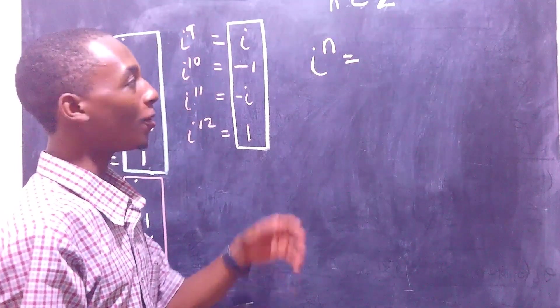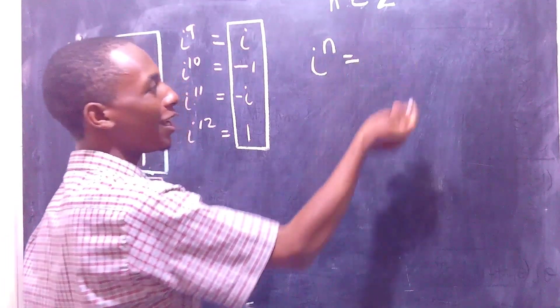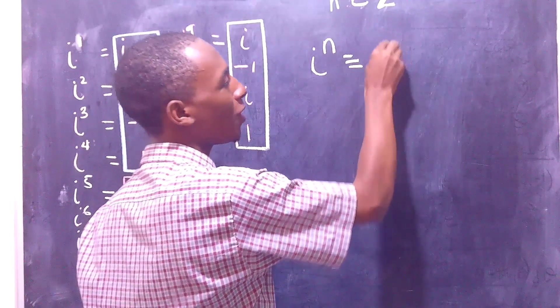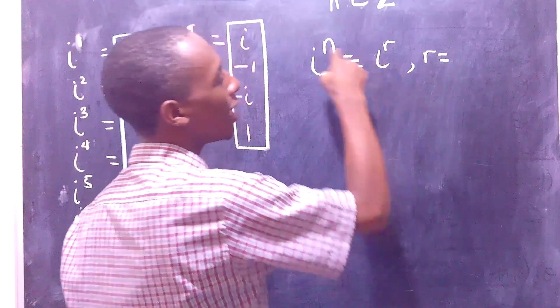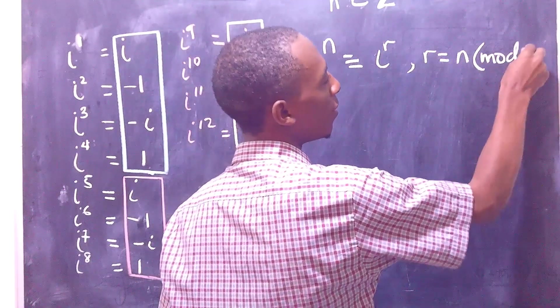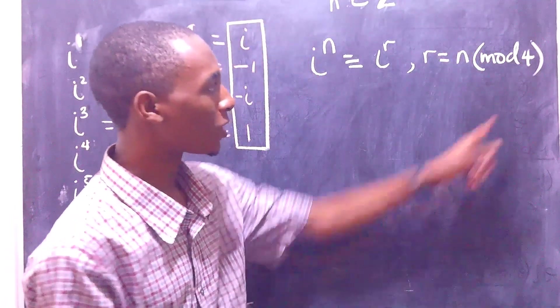So if we want to calculate the power of i, i to the nth power, that should be equal to, or equivalent to, i to the power r, where r is n, but written in mod 4, as we like to call it.